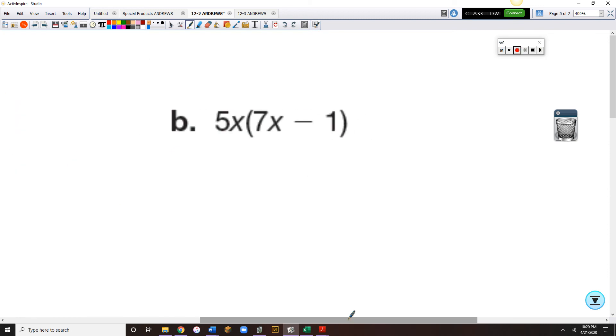So we still need to remember single distributive and how an x multiplies another x. Okay? So 5x times 7x, and 5x times minus 1, 35x squared minus 5x.